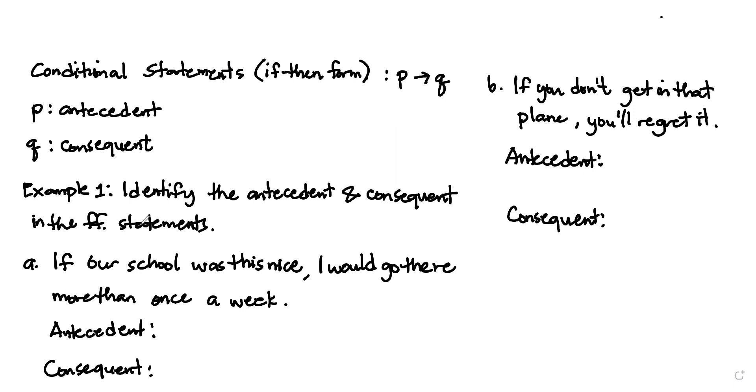Identify the antecedent and consequent in the following statements. If our school was this nice, I would go there. For the antecedent, just remember that P is the antecedent and Q is the consequent. Our antecedent, right after if, that will be the antecedent, and it should be a statement.